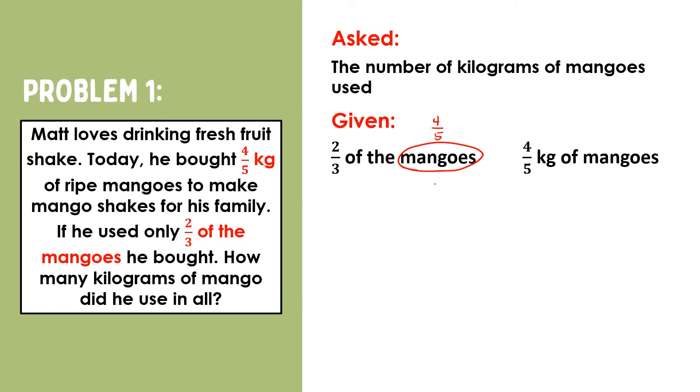So, for us to answer this problem, we need to know what two-thirds of four-fifths is. In two-thirds of four-fifths, this of here is a key word for multiplication. Therefore, our equation will be two-thirds times four-fifths equals n.